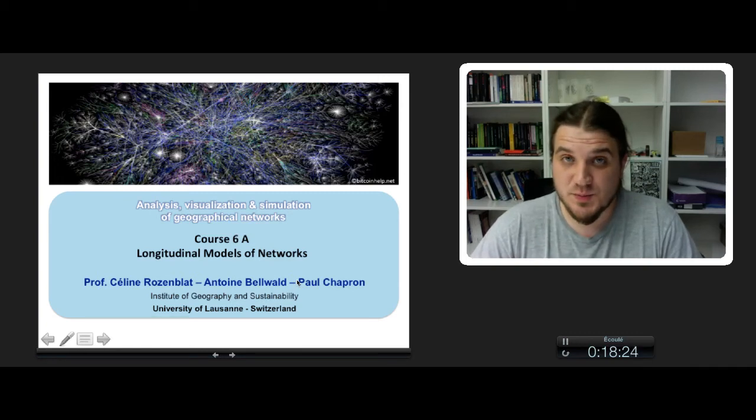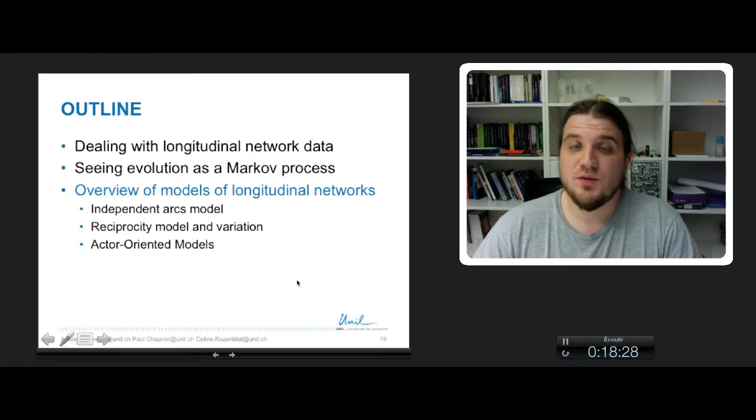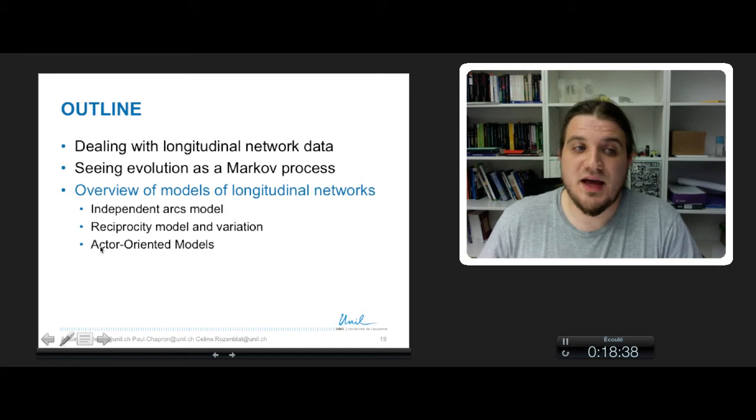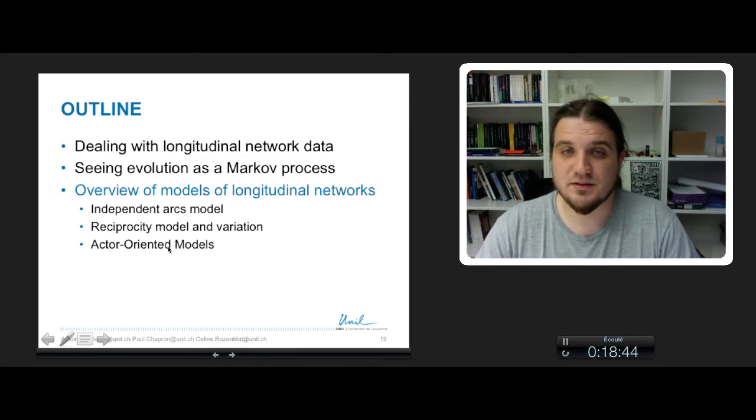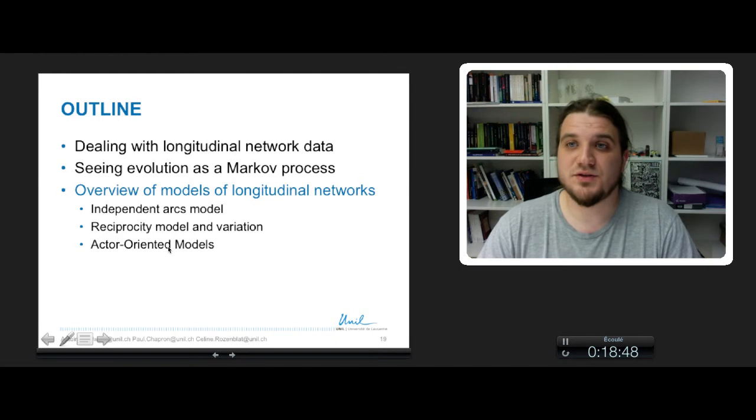This is the third part of curve 6a on longitudinal model of networks. We will see some simple models, independent arc models and reciprocity models, and some variation, especially actor-oriented models, which is a little bit more complicated but quite precise model of network evolution.